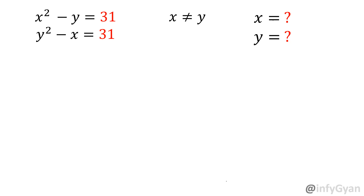Hi, welcome to Infigyan. Today we are going to solve one Olympiad practice problem on simultaneous equations: x squared minus y is equal to 31, and y squared minus x is equal to 31. Given that x is not equal to y, we have to find the value of x and y.